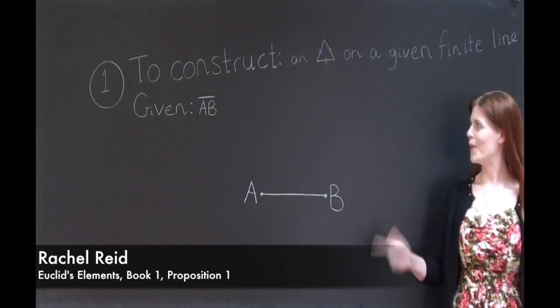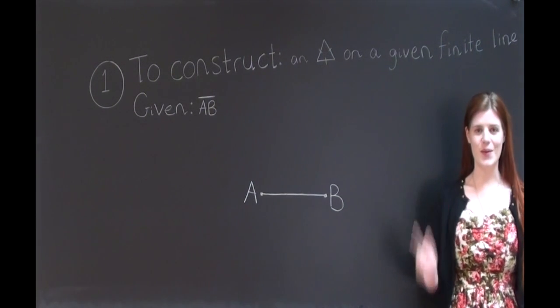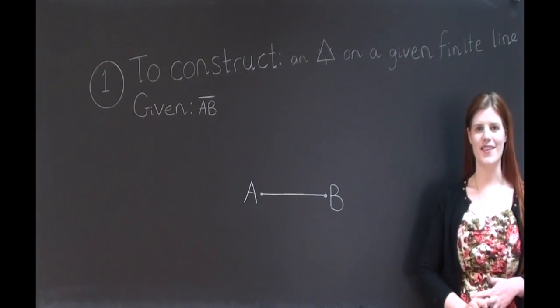Okay, so this is Proposition 1 of Book 1. We're going to construct an equilateral triangle on a given finite straight line AB.